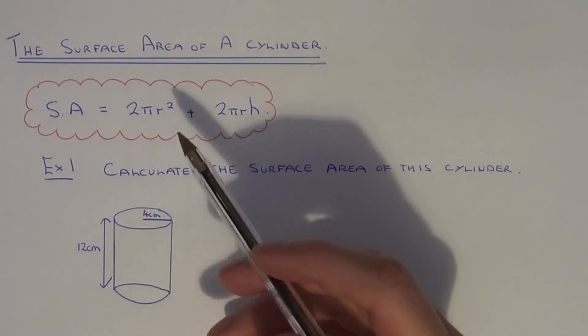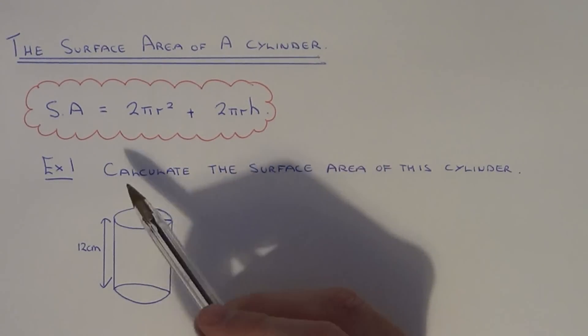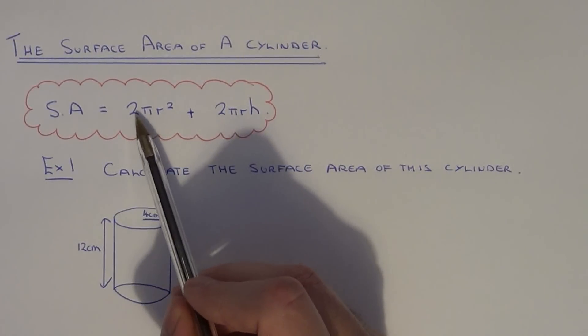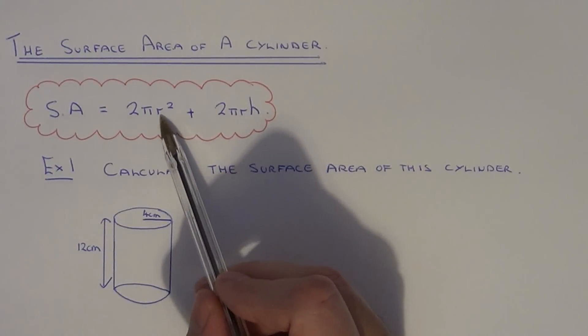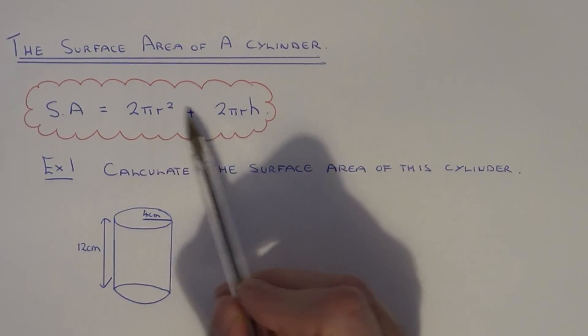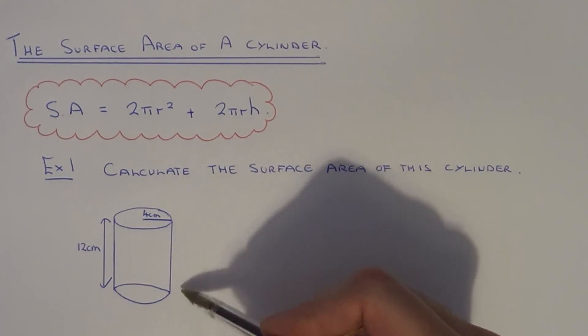The quickest way to work out the surface area of a cylinder is to apply the formula 2πr² plus 2πrh. r is the radius and h is the height of the cylinder.